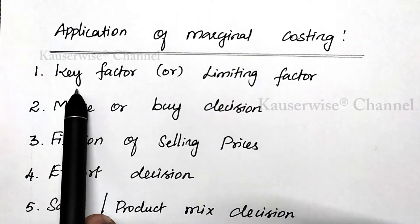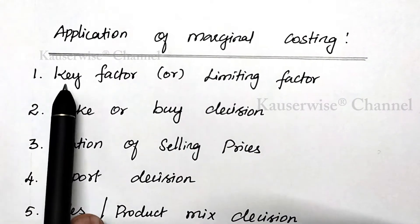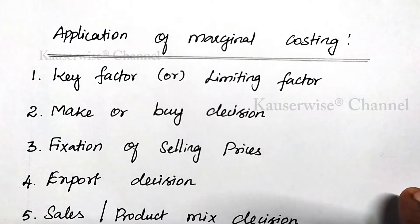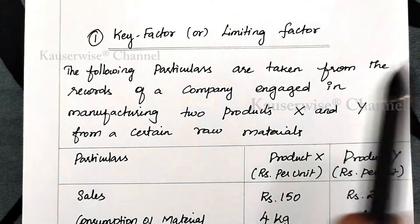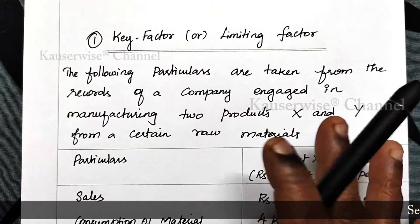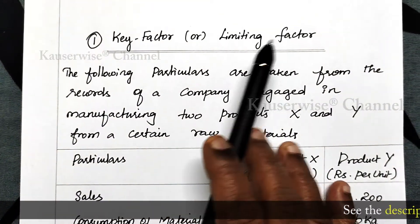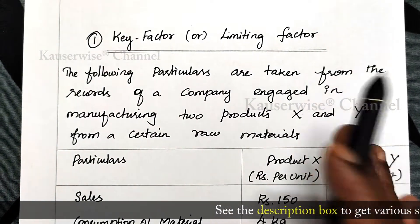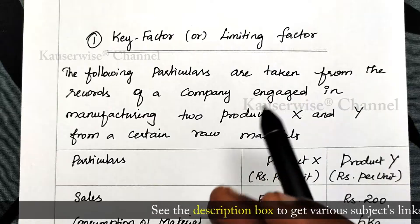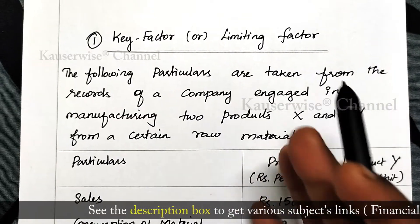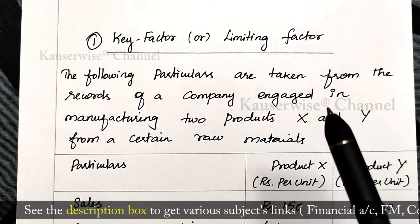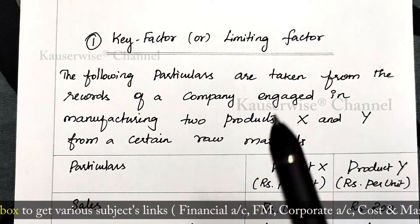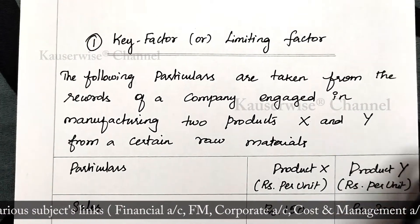In this video, we are going to see the first application, that is key factor or limiting factor. Let us see the problem. First, let me tell you what is the meaning of key factor or limiting factor. Any factor which is related with production or sales and which imposes limits on production or sales can be called a limiting factor or key factor.